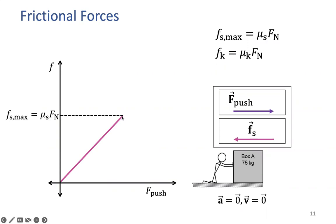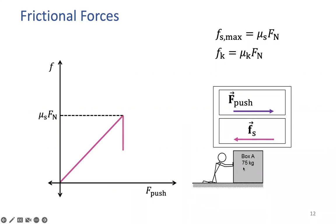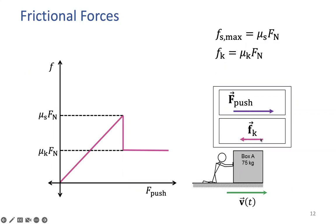Let's say 50 newtons is the maximum static friction the surface can have. If the lady pushes slightly beyond that maximum — say 51 newtons — the object starts moving. Once the applied force exceeds the static maximum, the object moves and friction becomes kinetic or dynamic friction. The pushing force is now greater than the kinetic friction resistance, giving a net force in the forward direction. That is why the object accelerates and moves. We will discuss further details and examples in class.